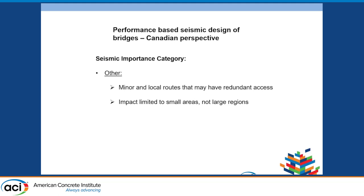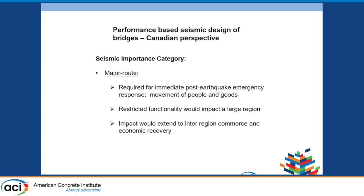Moving on to the 'major route' category: these are required more for immediate post-earthquake emergency response and movement of peoples and goods. Restricted functionality would then be impacting a larger region, and you would be impacting regional commerce and economic recovery overall.